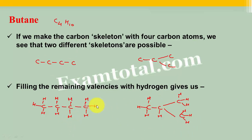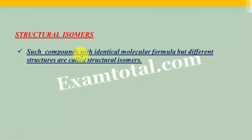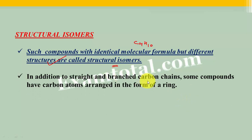If you have to differentiate these two structures — just like twins look the same but have different names — similarly in the butane case we need different names. A very important term comes here: structural isomers. Structural isomers are such compounds with identical molecular formula but different structures. Their molecular formula is C4H10 but they have different structures. They are called structural isomers.